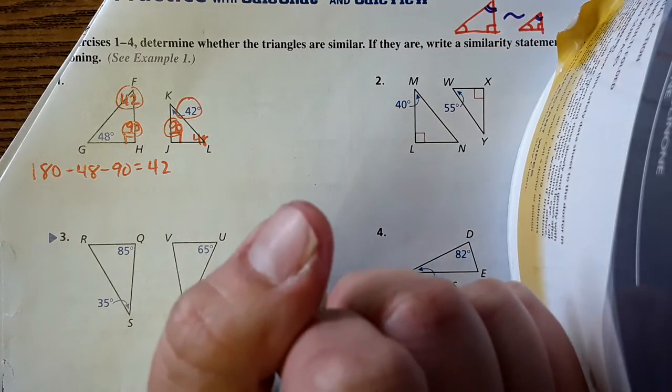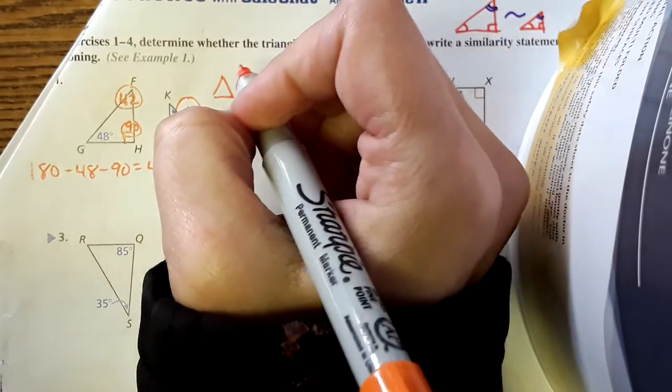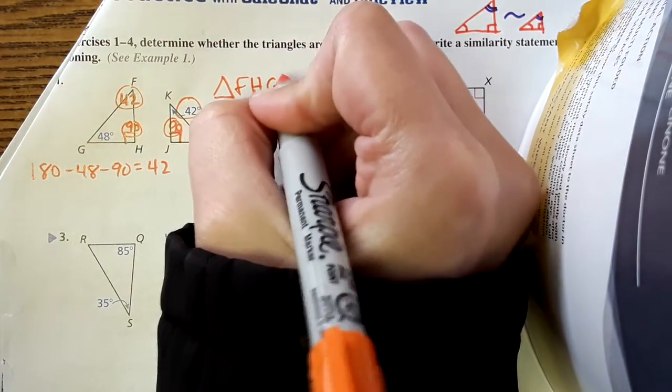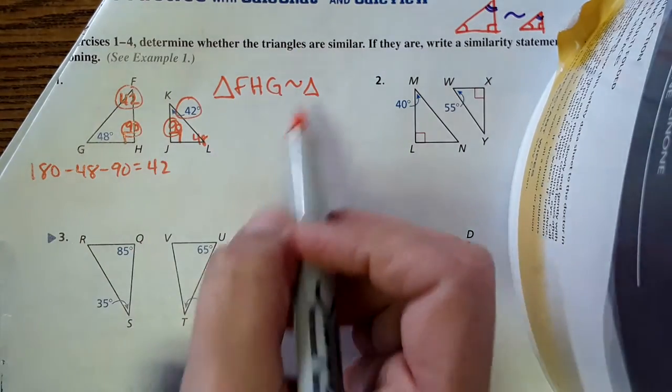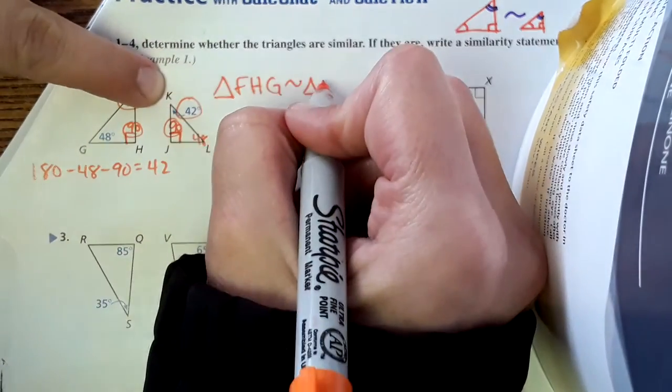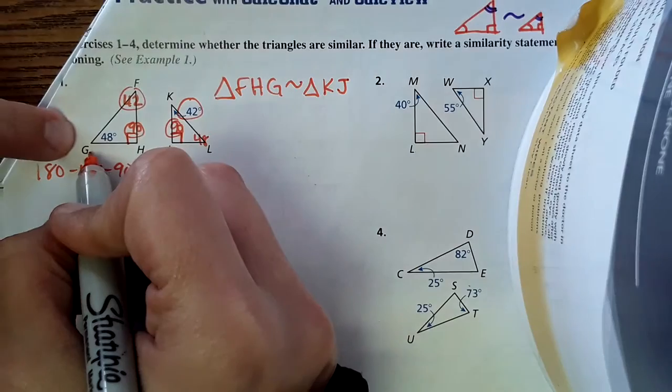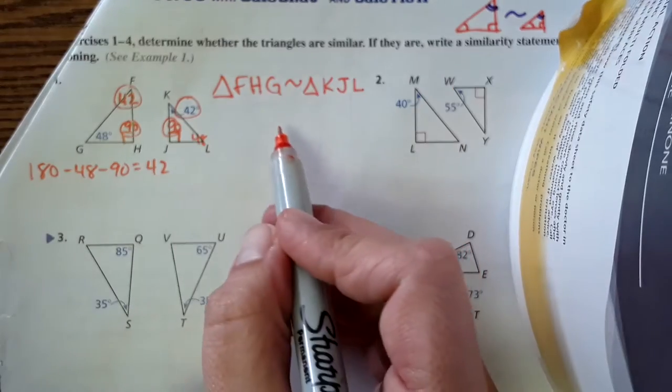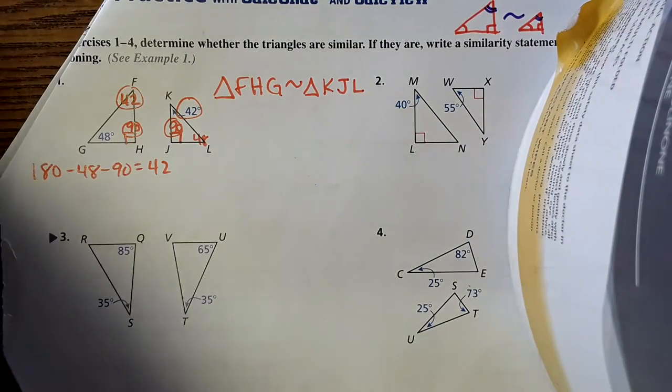When we identify them as similar, it's important that we're putting the letters in a specific order or way. So for this one, I'm going to do F, H, G. It's similar to triangle. And when I list out the angles for the second triangle, I need to make sure everything matches. So F is 42 degrees, so I need to put the 42-degree angle of this triangle first. H is the 90-degree angle, so I need to put the 90-degree angle next, and then the 48-degree angle last, so that would be L. So even if I wasn't showing the triangles, I could use this statement to find the angles that are equal.